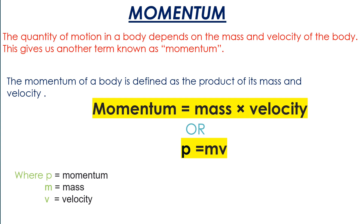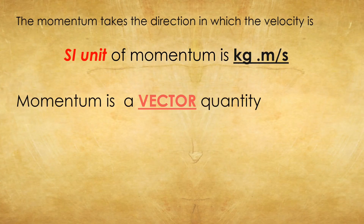The quantity of motion in a body depends on its mass and velocity, which gives us the term momentum. Momentum of a body is defined as the product of its mass and velocity: p = mv, where p means momentum, m means mass, and v means velocity. Momentum takes the direction of velocity, so momentum is a vector quantity. The SI unit of momentum is kg·m/s, since it is a product of mass (kg) and velocity (m/s).